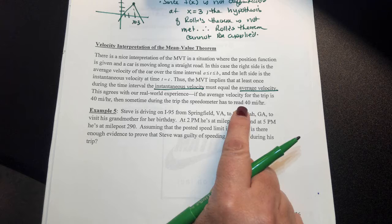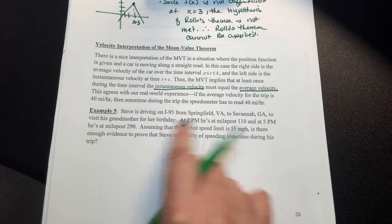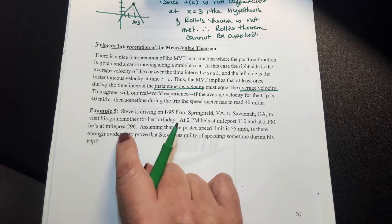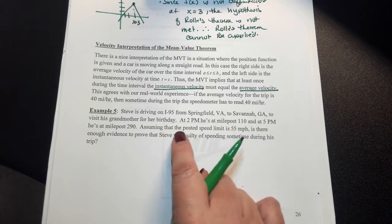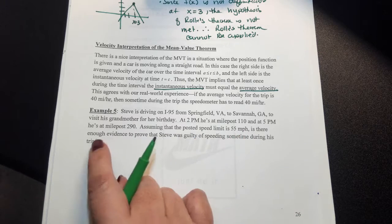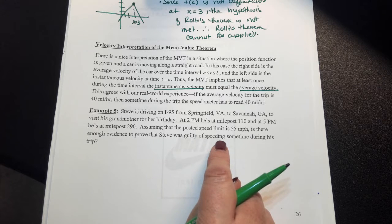For example, Steve was driving from I-95 Springfield to Savannah, Georgia, to visit his grandmother. At 2 p.m., he's at milepost 110, and at 5 p.m., he's at milepost 290. Assuming the posted speed limit is 55 miles per hour, is there enough evidence to prove that Steve was guilty of speeding sometime during his trip?